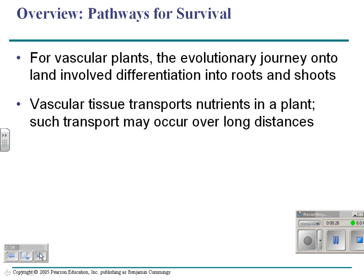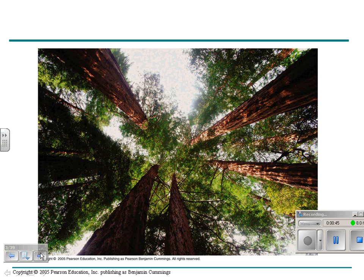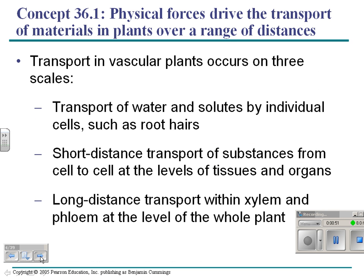Vascular tissue in a plant transports nutrients — water and other nutrients — sometimes 100 to 200 feet. A plant doesn't necessarily have a pump for this, so we have to talk about how this works. Here's an example of how far some trees have to bring nutrients.